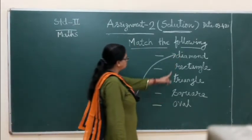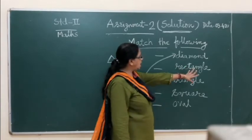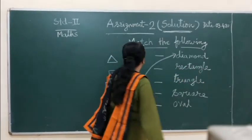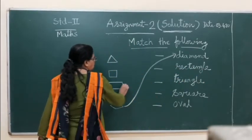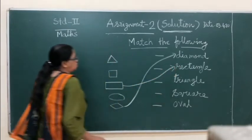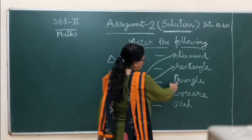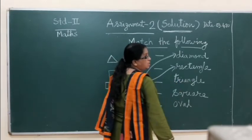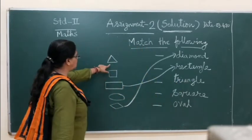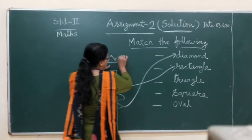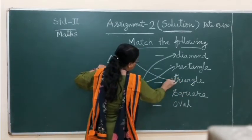Next one, R-E-C-T-A-N-G-L-E, rectangle. What is rectangle? Here. So we will match this way. Now third one, T-R-I-A-N-G-L-E, triangle. What is triangle? Here. So we match this way.